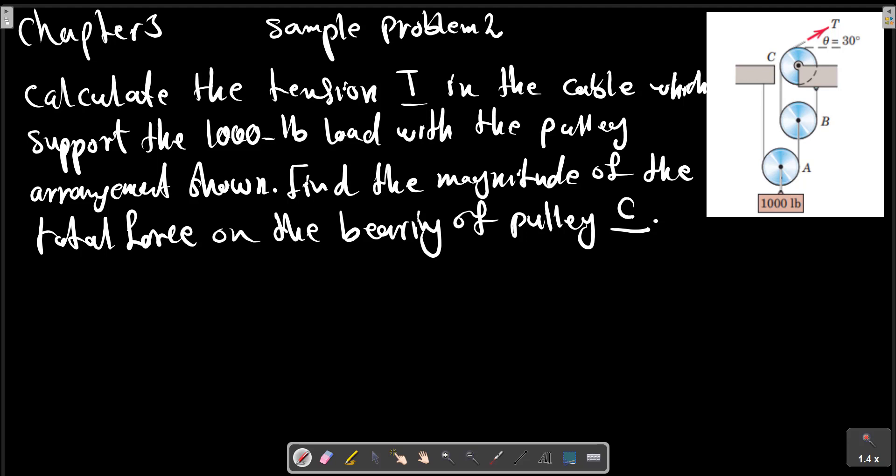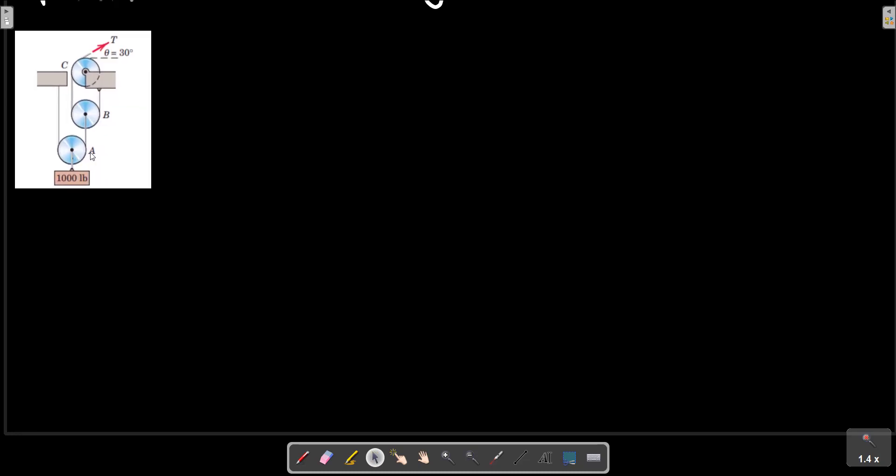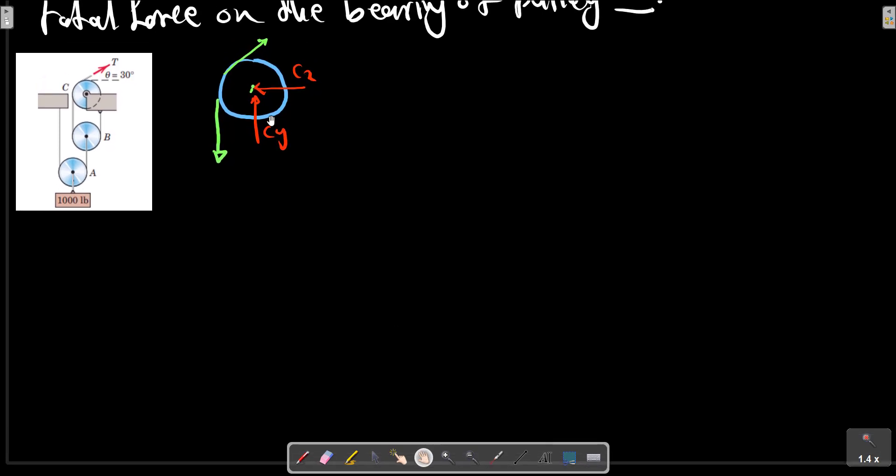So at first we should draw the free body diagram for each pulley in the arrangement. Consider the picture again here. We can start with pulley number, pulley C. With the force, we choose the direction arbitrary and we can recognize the sign after the calculation.